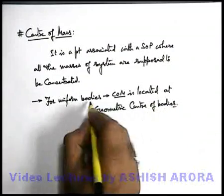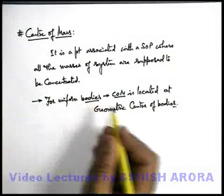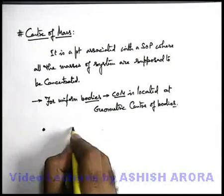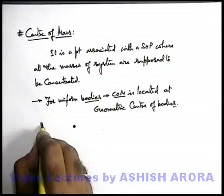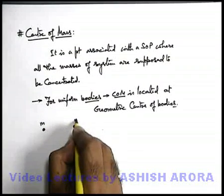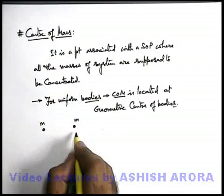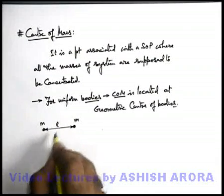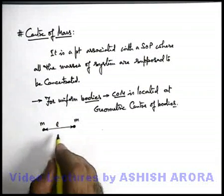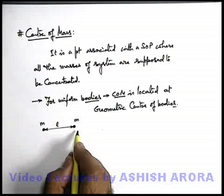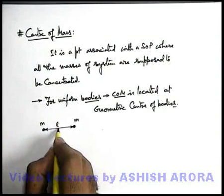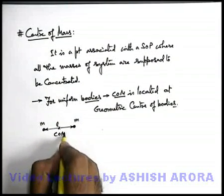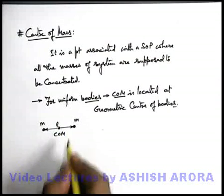Even if more than one body or two bodies are there, we can use the concept. Say we are having two identical bodies, both are of mass m and both are point masses, separated by a distance l. In this situation, due to symmetry, we can state the geometric centre is at the midpoint.